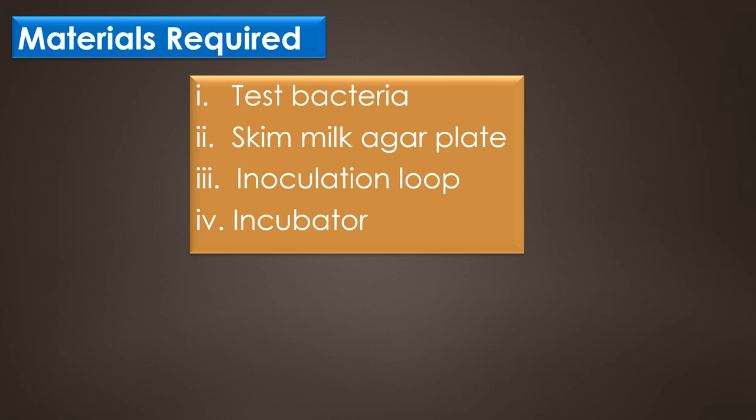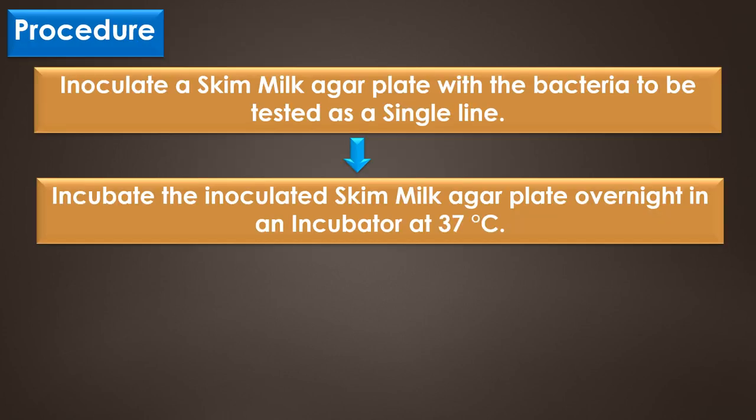Materials required for the casein hydrolysis test are: test bacteria, skim milk agar plate, inoculation loop, and incubator. Procedure: Inoculate a skim milk agar plate with the bacterium to be tested as a single line. Incubate the inoculated skim milk agar plate overnight in an incubator at 37 degrees Celsius, and examine the plate culture for the presence or absence of a clear zone or zone of proteolysis surrounding the growth of the bacterial test organisms.